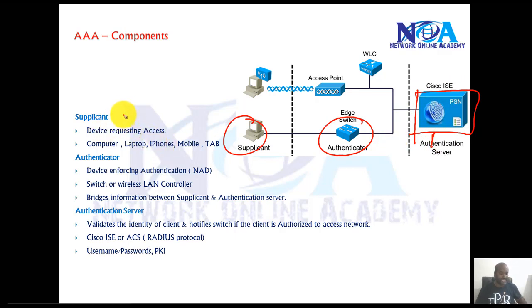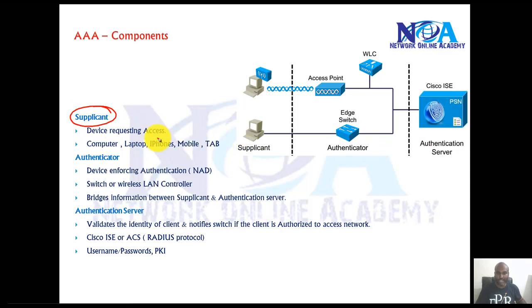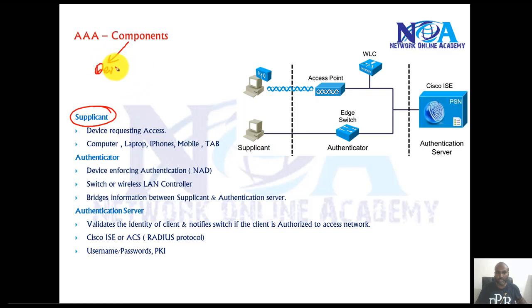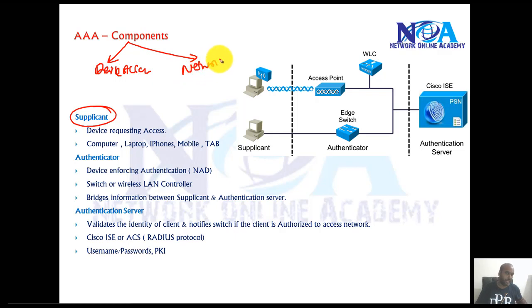The basic difference between these three is the Supplicant is nothing but the end device which is used for accessing the remote access. There are two different things we will do in network security: one is device access, the other one is network access.